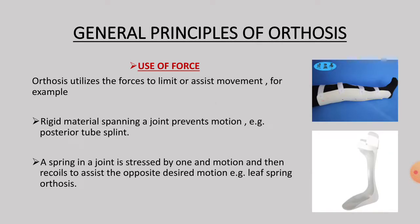What are the basic principles of orthosis? Orthosis uses forces to limit or assist movement. For example, a rigid material spanning the joint prevents motion, like a posterior tube splint or posterior knee guard. A spring in a joint that is stressed by one end motion then recoils to assist the opposite desired motion, like a lip spring orthosis.